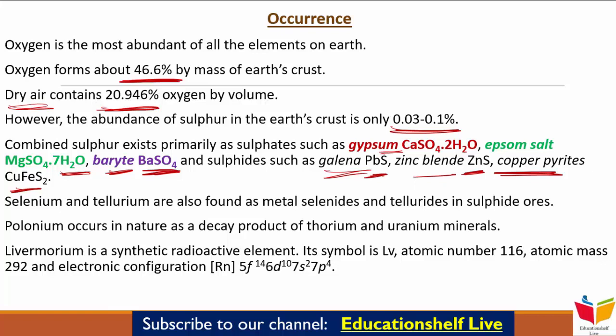Traces of Sulfur occur as Hydrogen Sulfide in Volcanoes। कुछ Organic Materials भी होते हैं जैसे Eggs, Proteins, Garlic, Onion, Mustard, Hair, Wool — इन सब में भी Sulfur होता है। तो जब आप प्याज काटते हैं तो आँसू आते हैं, वो आँसू Sulfur की वजह से ही आते हैं।